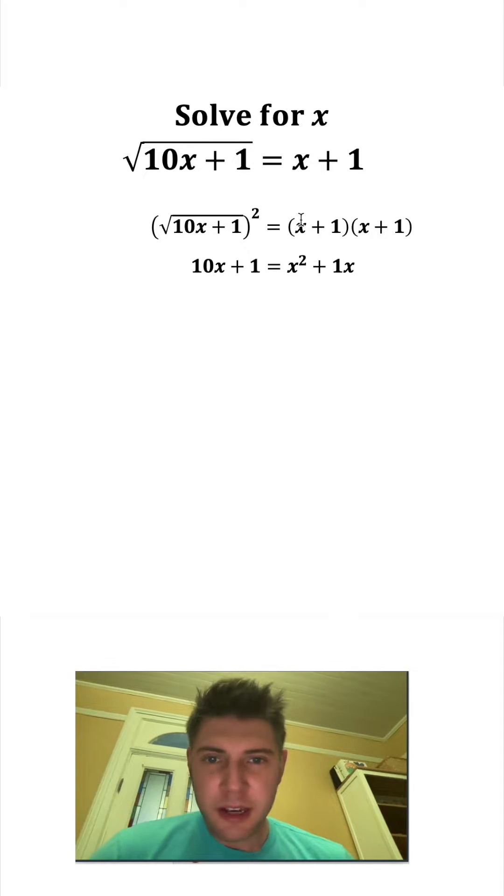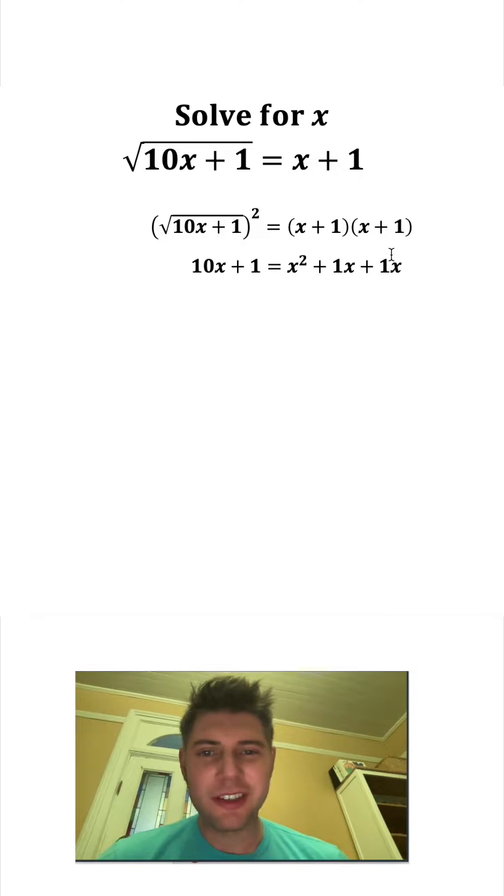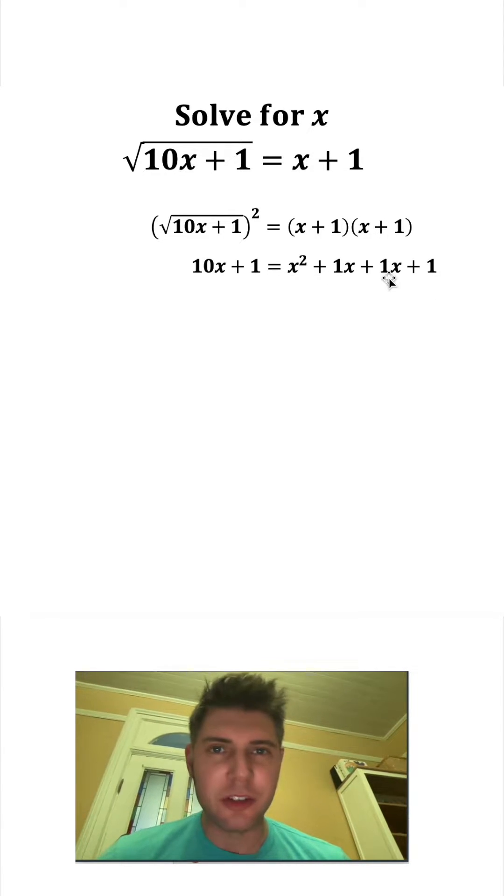x times x is x squared, x times 1 is 1x, and then 1 times x is also 1x, and then 1 times 1 gives us 1. And this 1x can combine with this 1x to give us 2x.